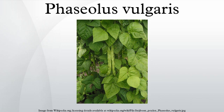The common bean is a highly variable species with a long history of cultivation. All of the wild members of the species have a climbing habit, but the many cultivars are classified as bush beans or pole beans, depending on their style of growth. These include the kidney bean, the navy bean, the pinto bean, and the wax bean. The other major types of commercially grown bean are the runner bean and the broad bean.